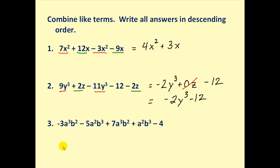Okay, let's take a look at one more. We need to be careful on this one. The variable part here is a cubed b squared. So this is not a like term. This one is.